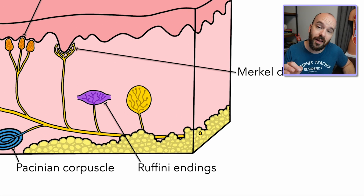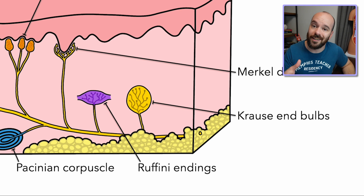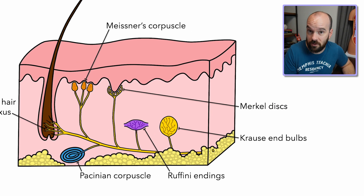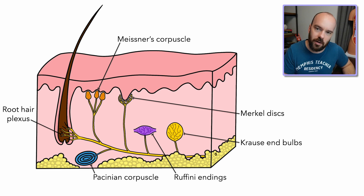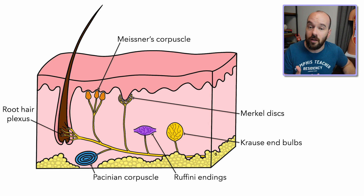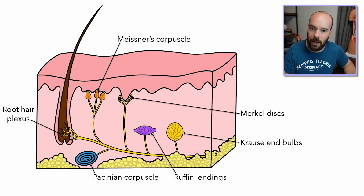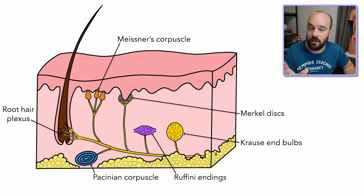Up next is the Krause end bulb. The Krause end bulb detects temperature, so it's considered a thermoreceptor — specifically, it detects cold, not warm temperatures. It's sometimes also classified as a mechanoreceptor, and it has been found to have other functions such as in sexual stimulation. It's not fully understood, but the main thing to know about Krause end bulbs is that they detect cold, so we generally classify them as thermoreceptors.